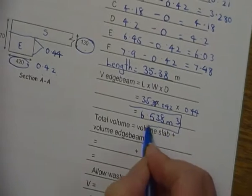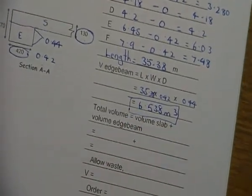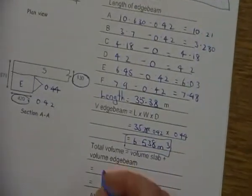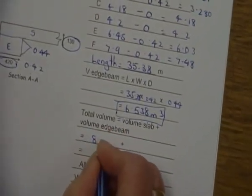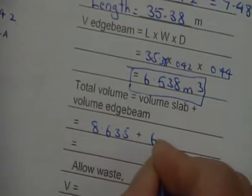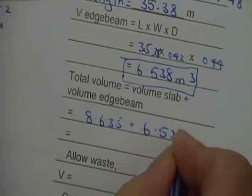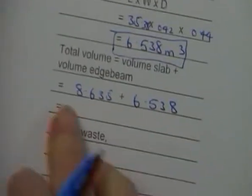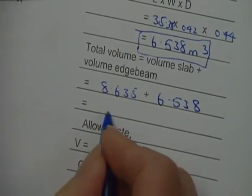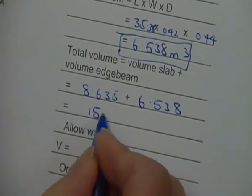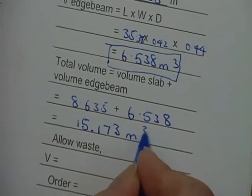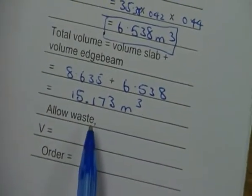That's my edge beam answer now. Now I have to add my slab answer for the volume and my edge beam answer. So I'm just writing that down: 8.635 plus 6.538. We add those two together and you're going to get an answer of 15.173 meters cubed.